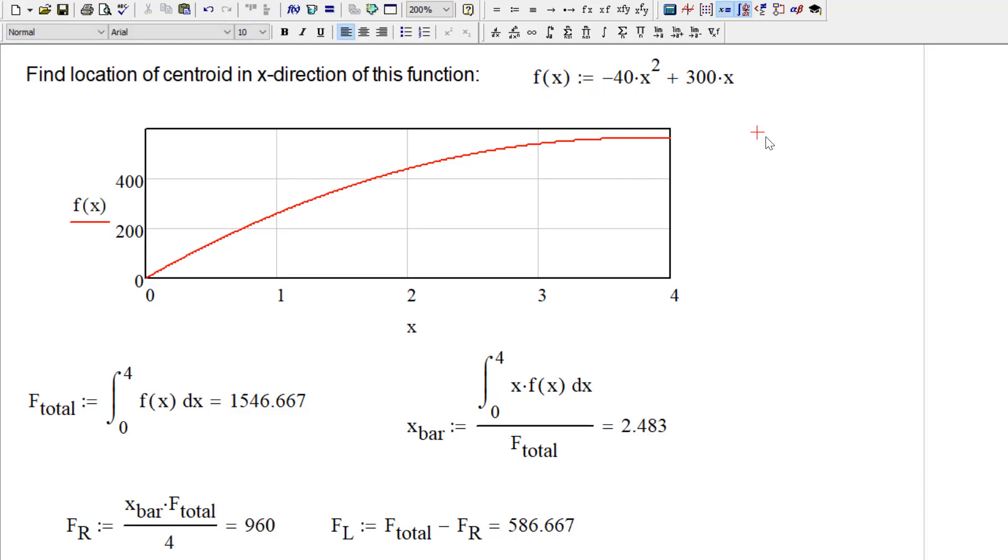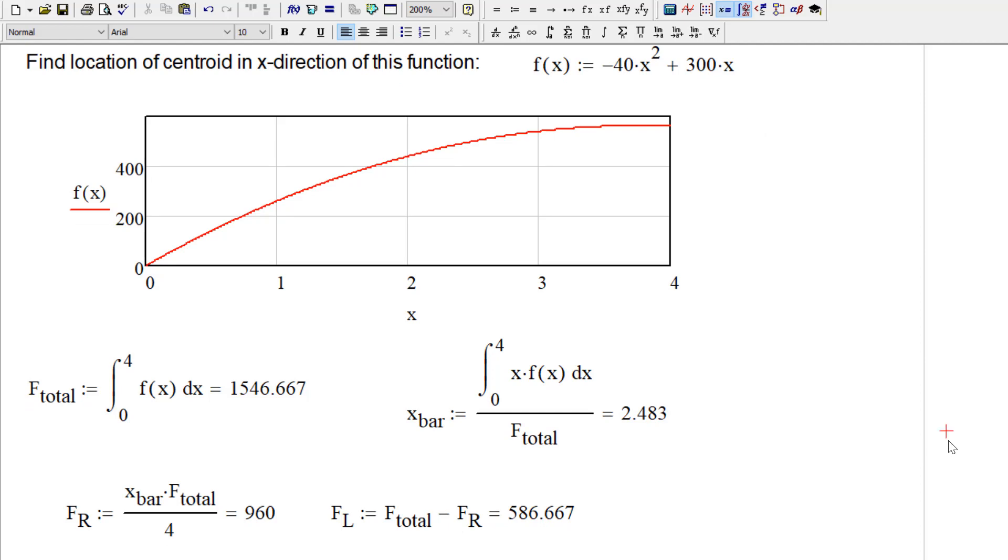Right there is our function. So right here is what the function looks like. This is what I had drawn on the board. There's our total force, which we calculated before. And there's the location of X bar. F total here is the same as that integral down there. So 2.483 meters. We've got all that. And again, we figured out the right hand and the left hand forces.